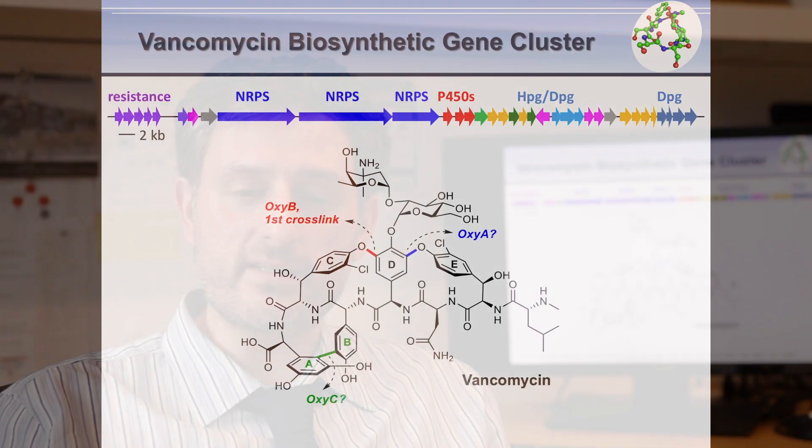This approach, however, is challenging at best with our antibiotic of last resort, vancomycin, due to its sheer complex size and structure. One of the ideas we've been pursuing in my group is to use the biosynthetic enzymes involved in the natural production of vancomycin to generate the antibiotic as well as new analogs.